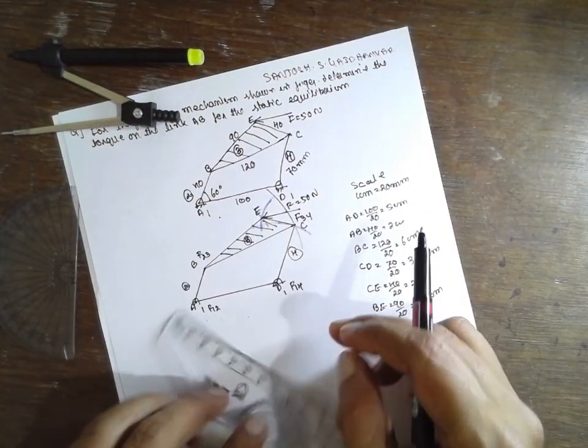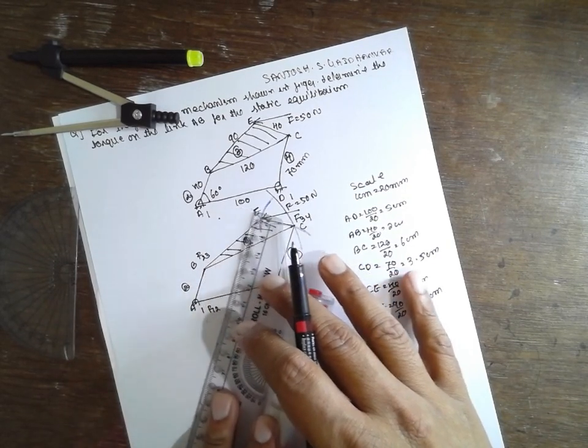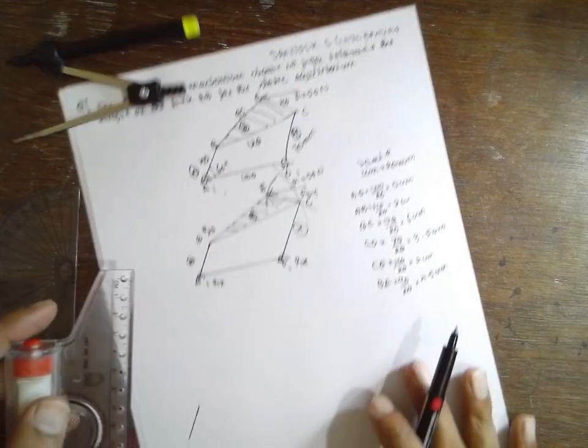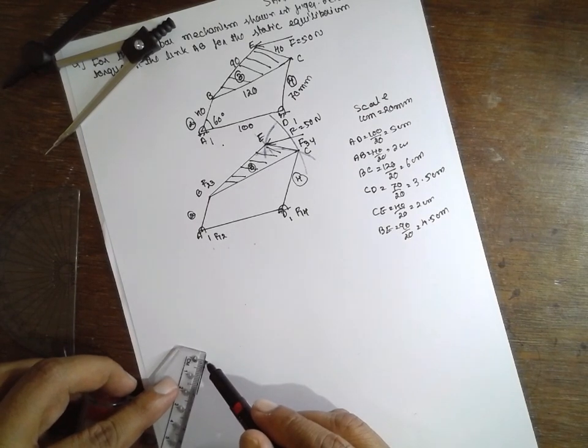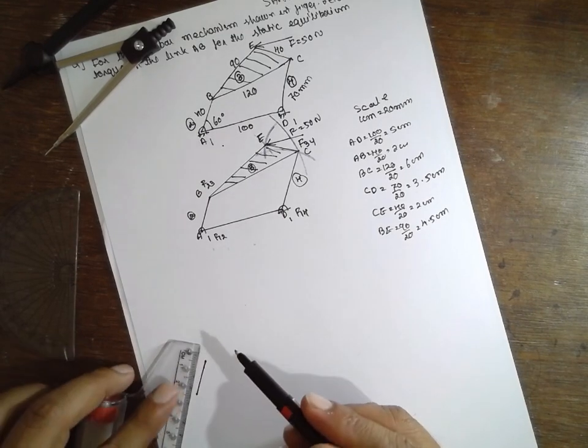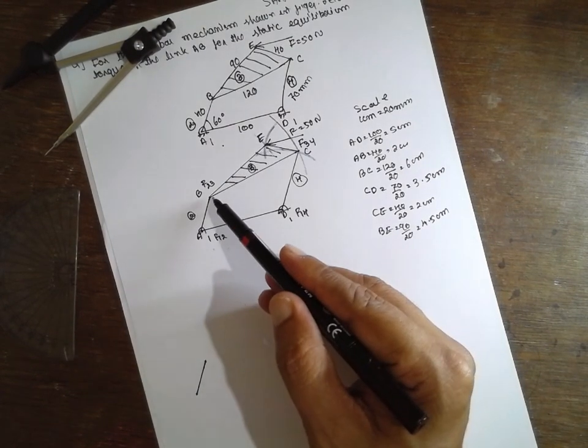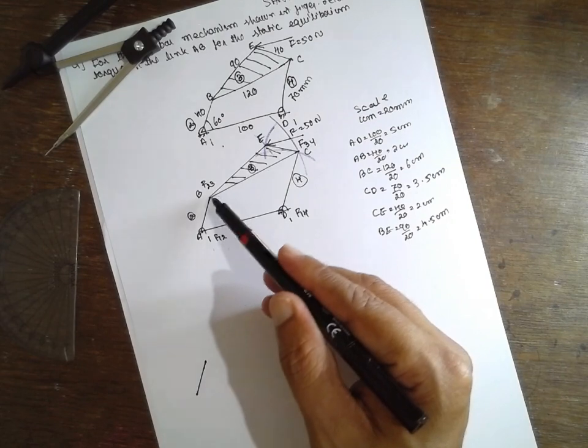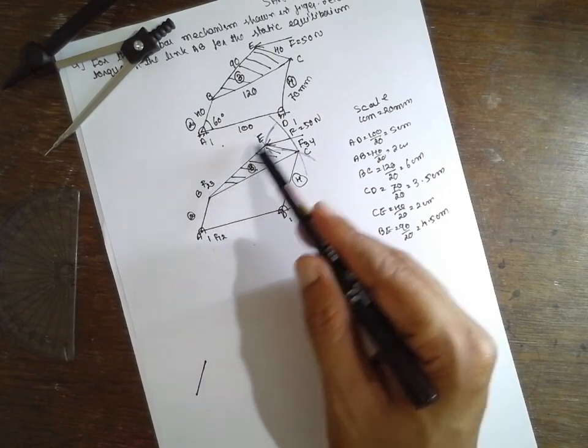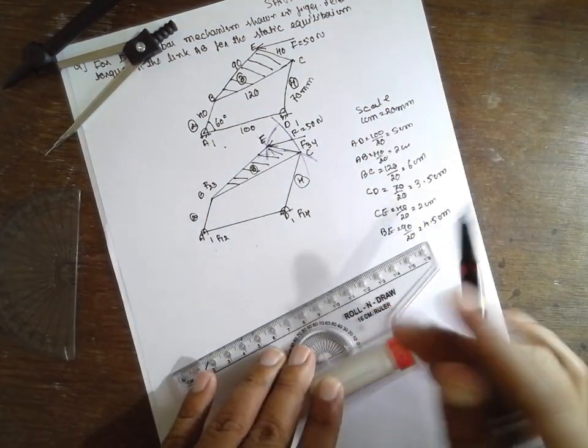Now, first, I will draw this part, link 1, also link 2, 2 cm. This is a hinge part, this is unknown for us. We know that the reactive link will act here, but which direction, whether we have to take this or this, that is the important part. Next, I will draw this link here as it is, this is 6 cm.